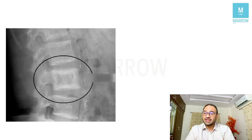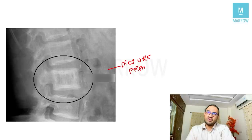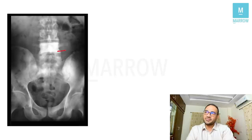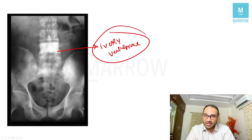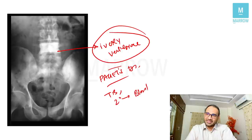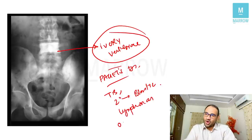Let's quickly review a few more spine spotters. Picture frame vertebra is seen in Paget's disease. Ivory vertebra is also seen in Paget's disease, but also in tuberculosis, blastic secondaries, lymphomas, and osteoblastoma. Codfish vertebrae — the best answer is osteoporosis, but other conditions include osteomalacia, hyperparathyroidism, and certain hemoglobinopathies.